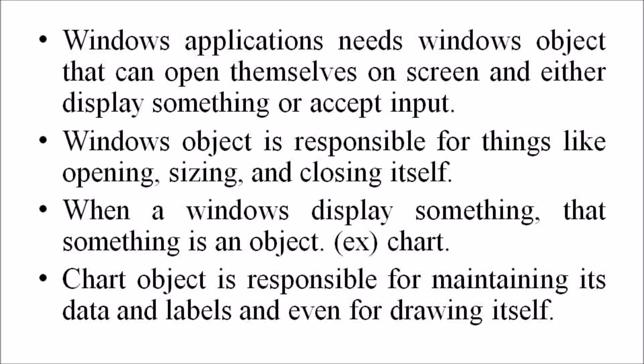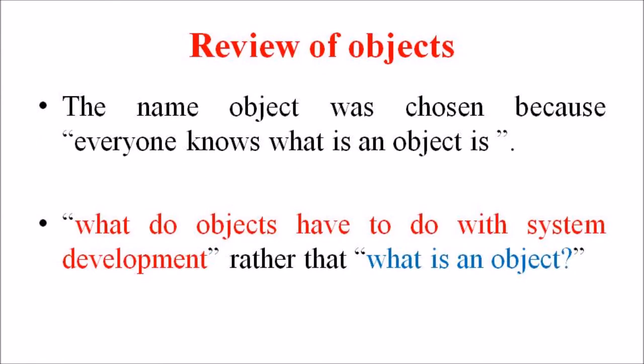A chart object is responsible for maintaining its data and labels and even for drawing itself. The object-oriented system development makes software development easier and more natural by raising the level of abstraction to the point where an application can be implemented. The name 'object' was chosen because everyone knows what an object is. The real question is what objects have to do with system development, rather than what an object is.